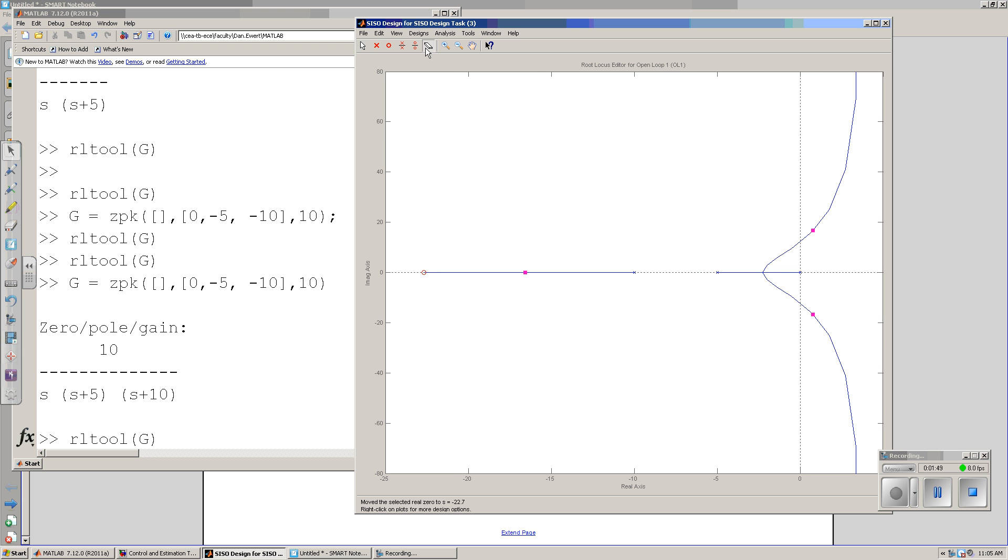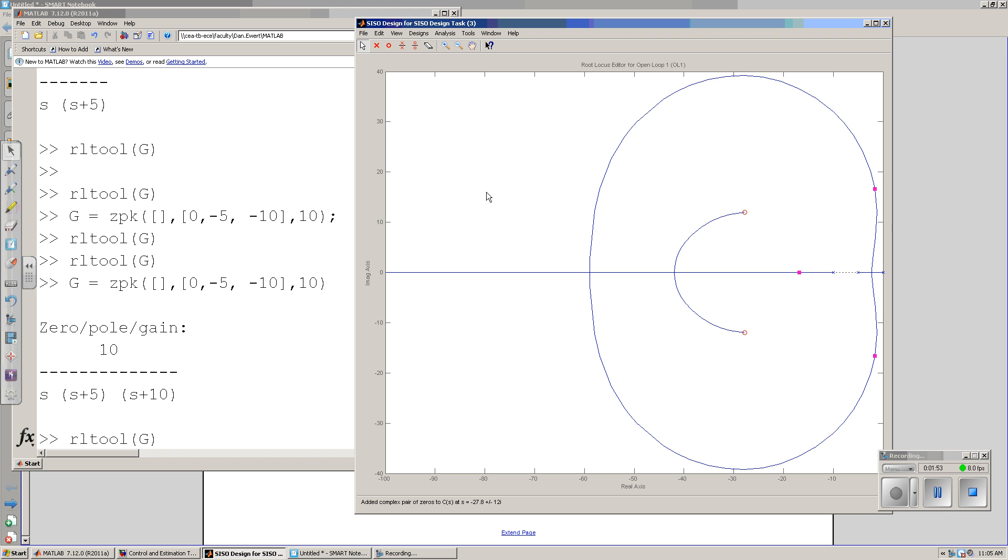I can also have complex poles and complex zeros. See over here I've got a complex zero. As I move that complex zero around and grab it, you see the zeros attracting the root-locus.